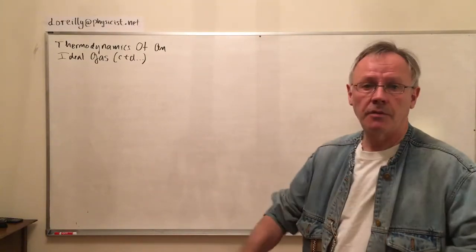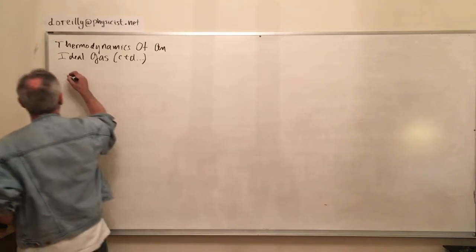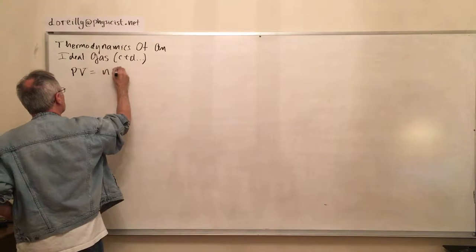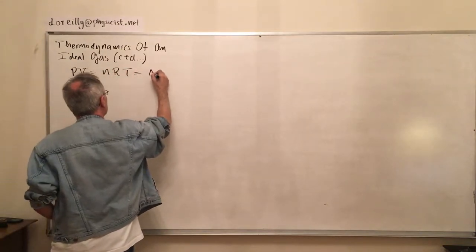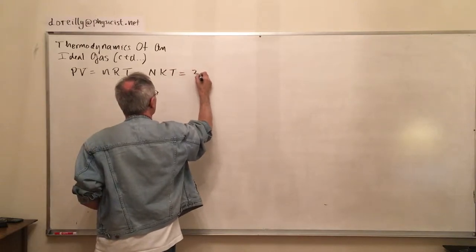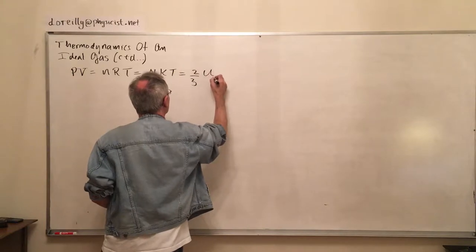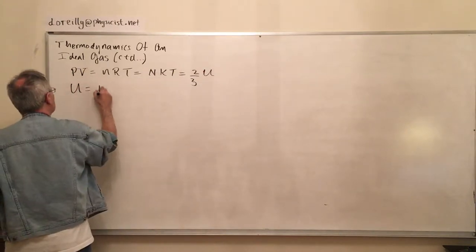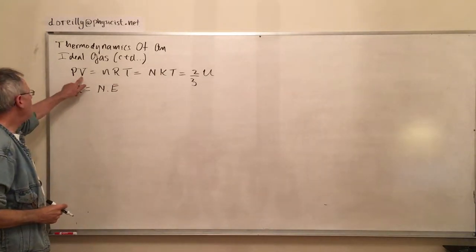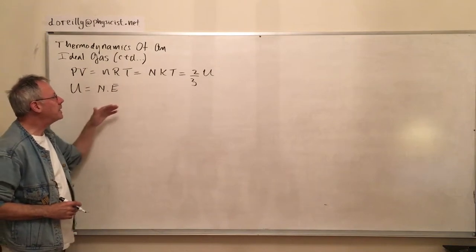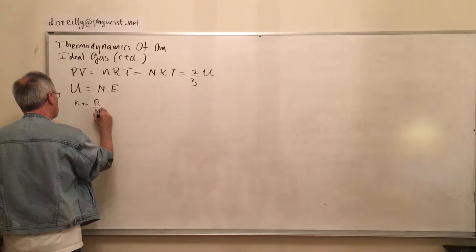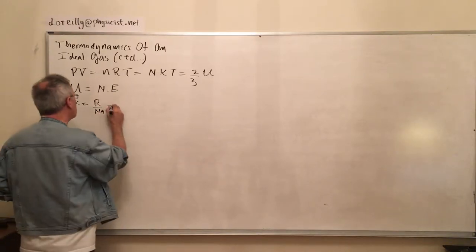So far what we have is this: PV or pressure times volume - I'm not going to relist all these things again, I'll just say what K is. K is R over NA, it's Boltzmann's constant.